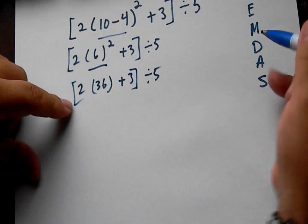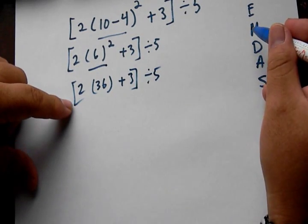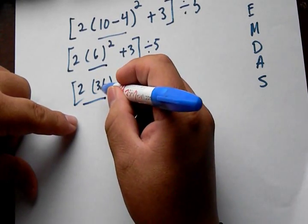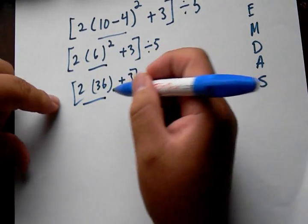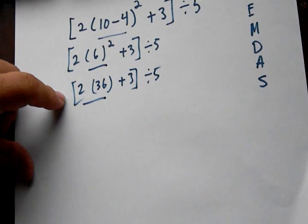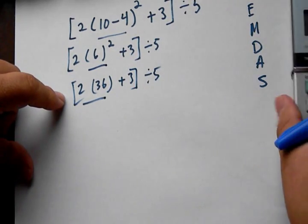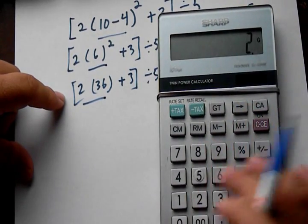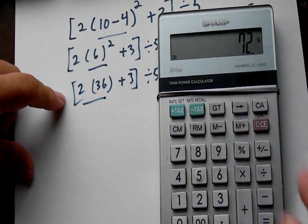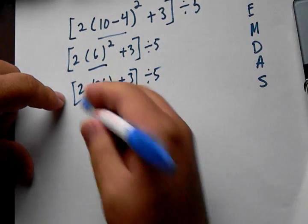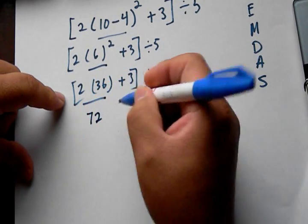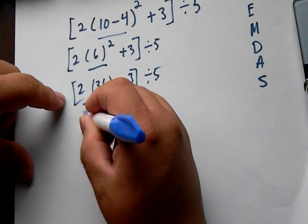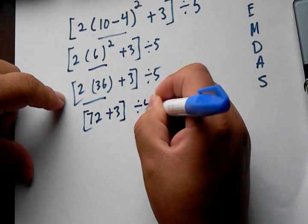Now we follow multiplication. So 2 times 36 is 72. We get 72 plus 3, and remember we have these divided by 5.